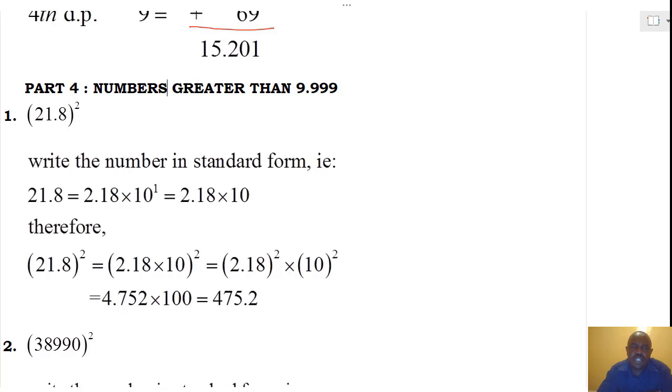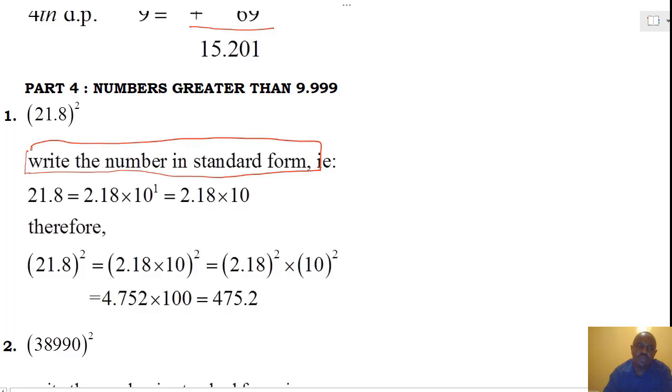We now go to the next category of the numbers greater than 9.99. And our first number is 21.8. To determine the square of 21.8, we have the following two steps. Step number one is we write the number that we have in standard form. Remember, writing a number in standard form is writing it in the form a multiplied by 10 to power n.